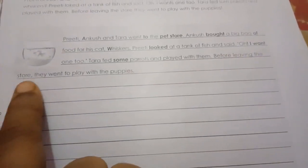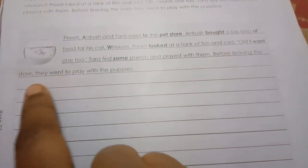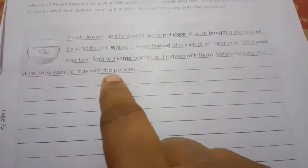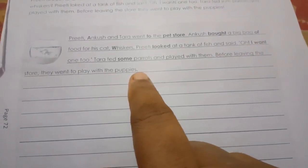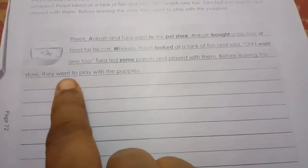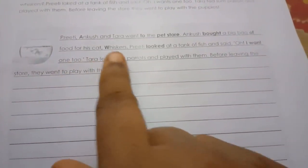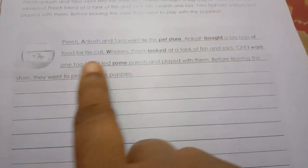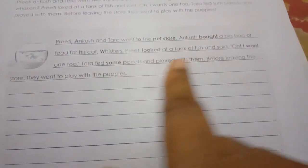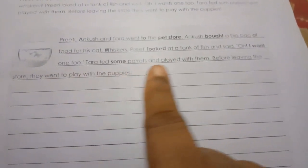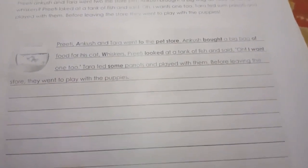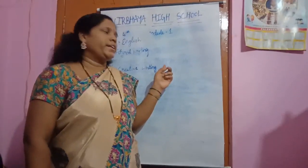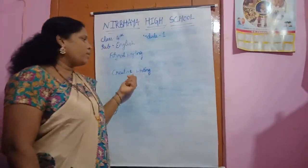Tara fed some — S-O-M-E — parrots — P-A-R-R-O-T-S — and played with them. Before leaving the store, comma, they went to play with puppies. Understood, children? This is your yesterday's formal writing — check the changes you have made, whether they are correct or not.